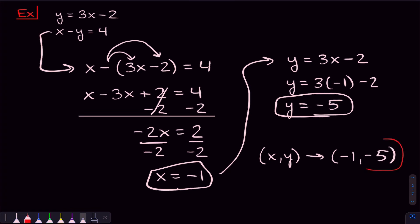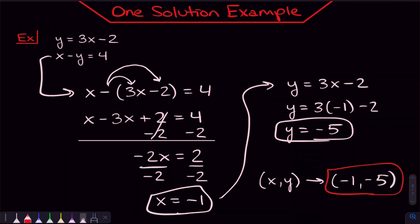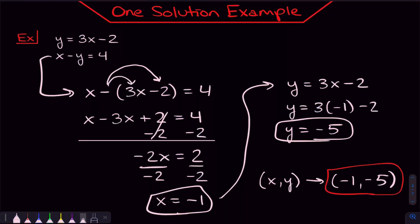So that is an example where we get one solution. That's generally what happens when you solve a system of equations — you get a value for X and a value for Y. But now we'll get into two examples where that doesn't happen: one where there's no solutions, and one where there's infinite solutions. We'll do the no solutions example first.